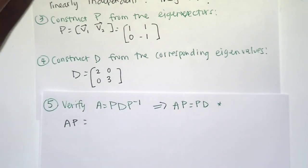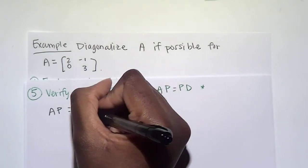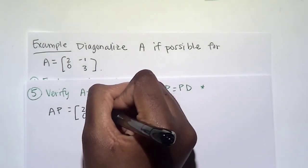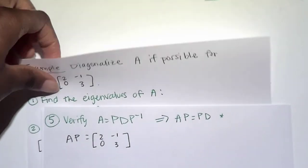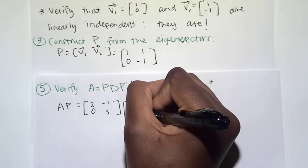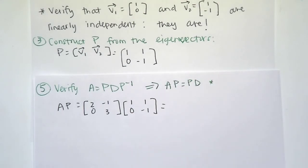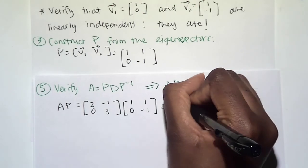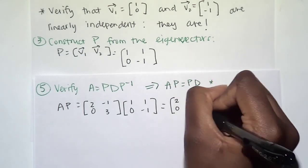So first, I'm going to multiply A times P. If we go back to the very beginning, our matrix A is [2, 0; negative 1, 3]. And our matrix P is [1, 0; 1, negative 1]. And we multiply these together. I got down the columns, 2, 0, 3, negative 3.